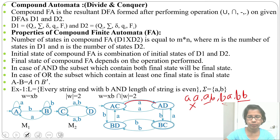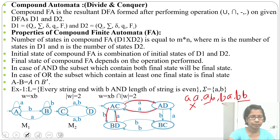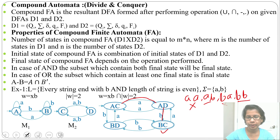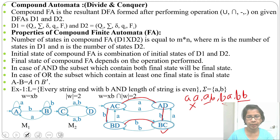Let's verify: AA is not accepted — from AC by a it goes to AD, from AD by a it goes to AC, which is not a final state. BA is also not accepted — it goes to BD then back to AC. For AB: from AC by a go to AD, then from AD by b go to BC — that is the final state, so it accepts. For BB: from AC by b go to BD, then from BD by b go to BC — so it accepts. Any string of even length that ends with b will be accepted by this DFA. Thank you.